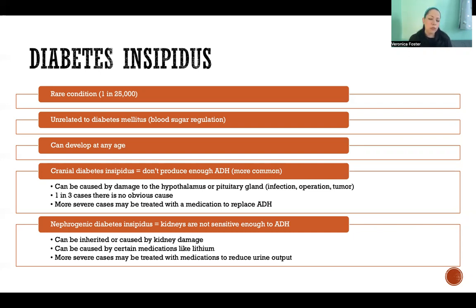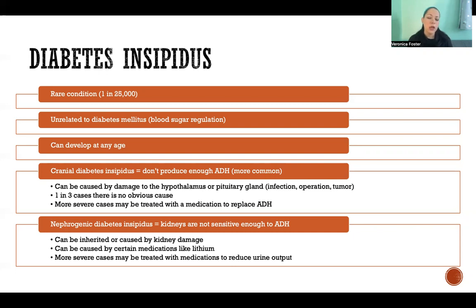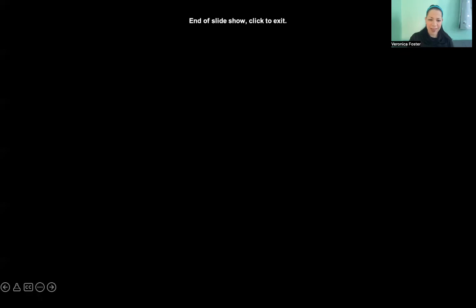For nephrogenic diabetes insipidus, the same principle applies: if it's mild, drinking more water may be enough to compensate. In more severe cases, there are medications available to reduce urine output. Thank you so much for watching this video and I hope you have a great day.